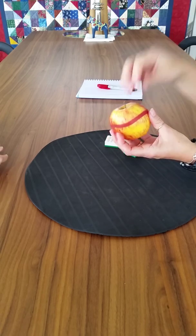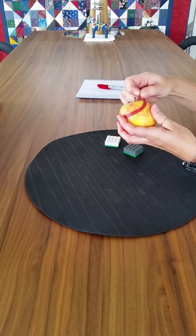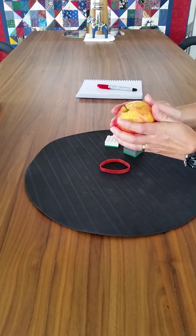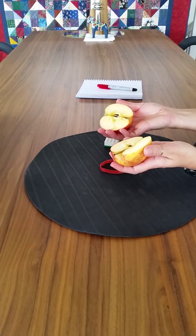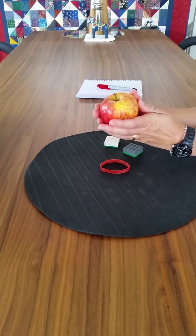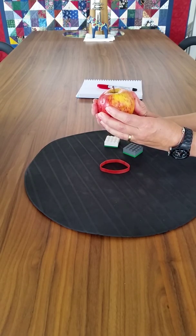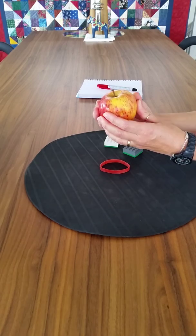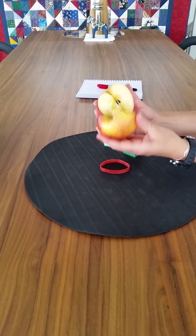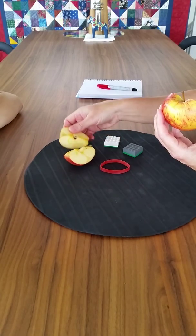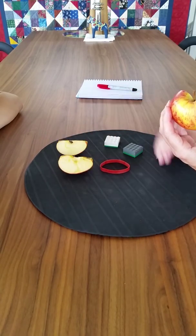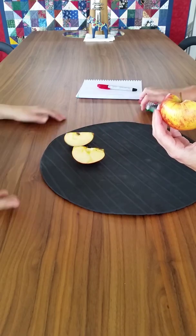Right. Yep. So what happens if I do that? It becomes two halves. Two halves. So the two halves together make a whole. Exactly. And what happens if we split the half into halves? That is a quarter. That makes a quarter.